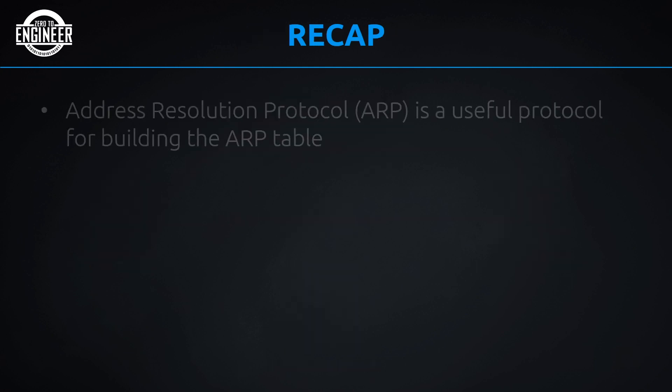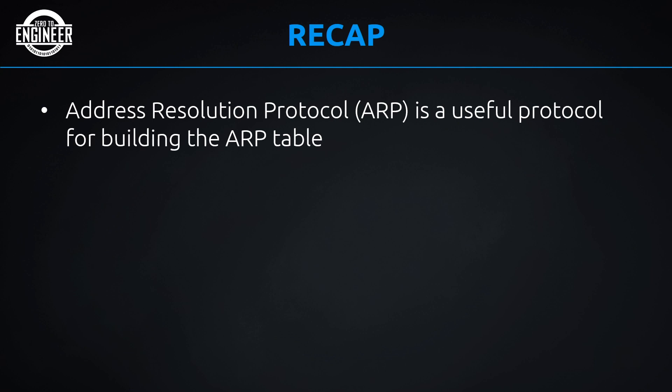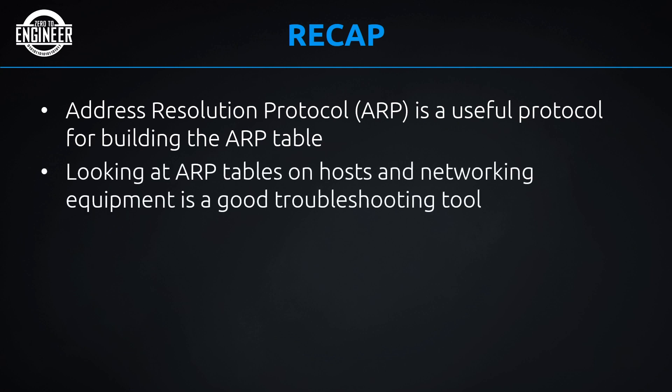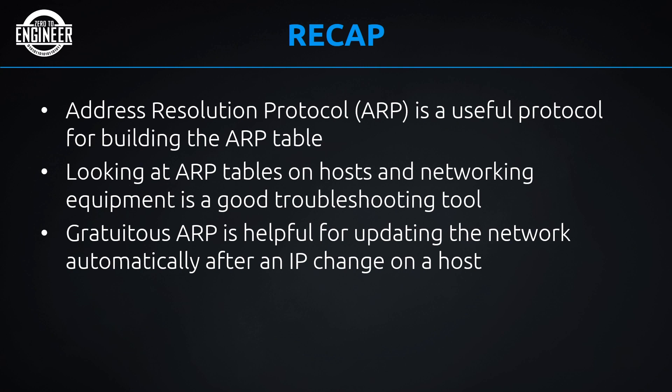Here's our recap. Address Resolution Protocol is a very useful protocol for building the ARP table — that's exactly what it was made for. Looking at ARP tables on hosts and networking equipment like routers and switches is good for troubleshooting: you can check if a device knows the IP-to-MAC relationship, and if it doesn't, that may explain why communication isn't happening. Gratuitous ARP is helpful for automatically updating the network, for example after changing your IP address and rebooting.